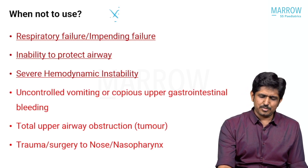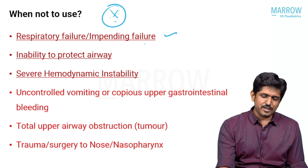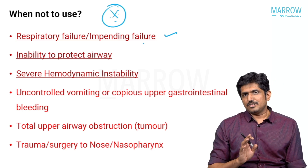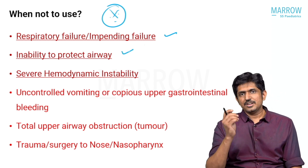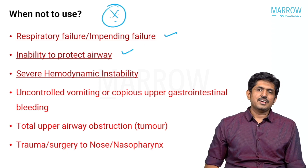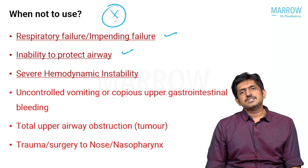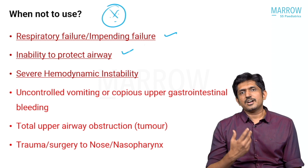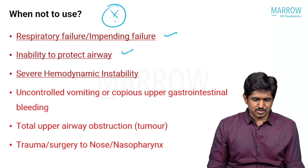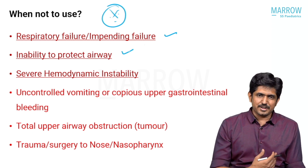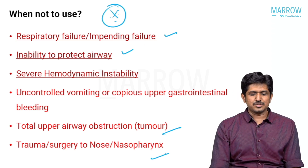When not to use HFNC — this is very important, even for exams. HFNC is contraindicated in respiratory failure or impending respiratory failure when there is bradypnea, bradycardia, or a fall in GCS. Inability to protect the airway — loss of gag reflex, pooling of secretions, or low GCS — is a definite contraindication. Severe hemodynamic instability, where a child is hypotensive and not responding to one or two boluses or requires more than one vasopressor, is also a contraindication. Uncontrolled vomiting, copious upper GI bleed, and total upper airway obstruction should not be managed with HFNC.